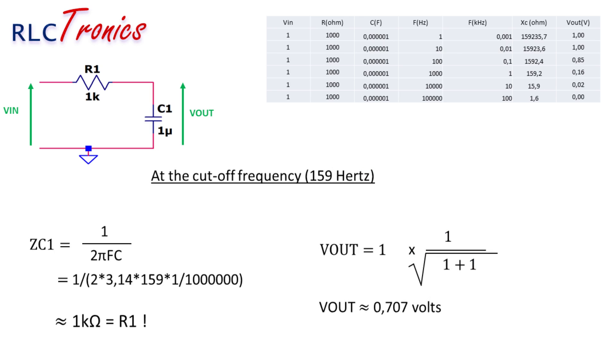You will also notice that the impedance of the capacitor equals the resistor at the cutoff frequency point. The output voltage in this case equals 0.707 volts.